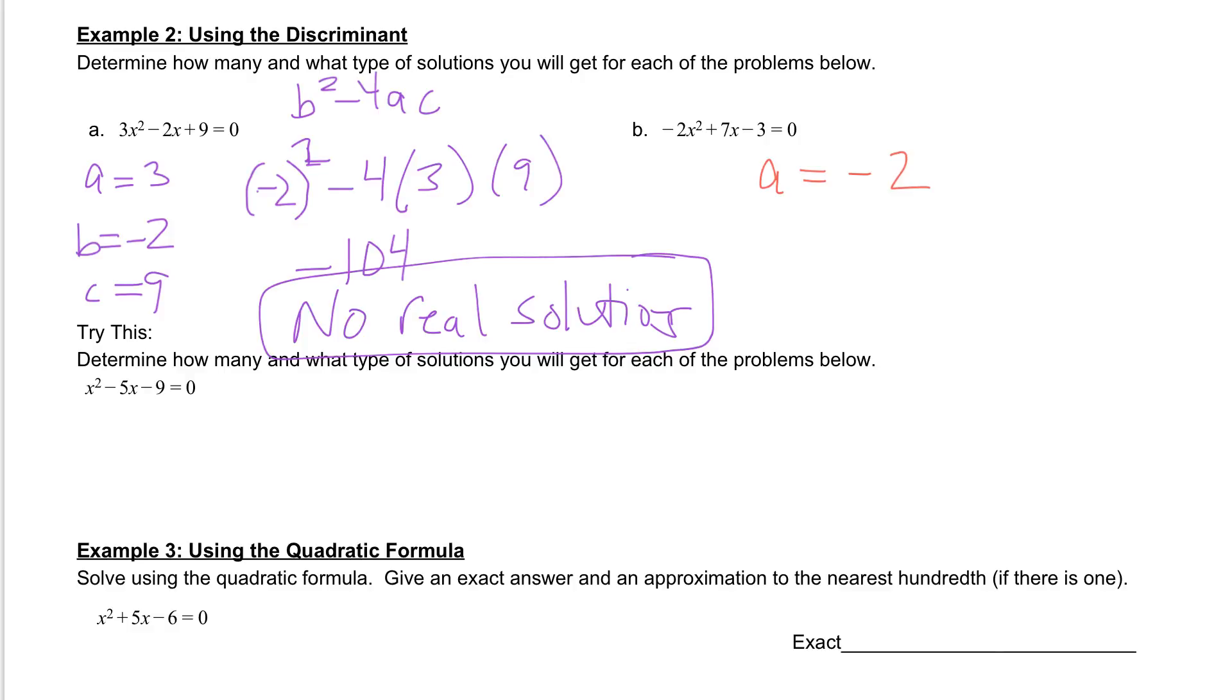Then if we take a look at the b value, the b value is 7. So b is equal to 7. And then if we take a look at c, c is going to be our constant which is negative 3.